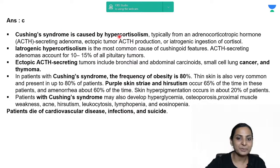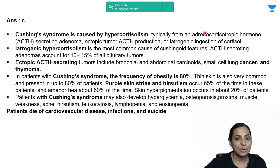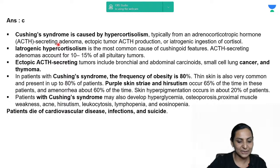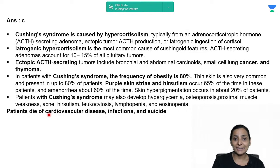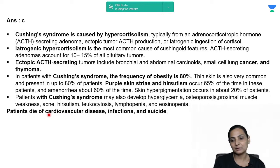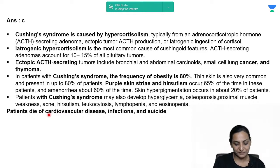Cushing syndrome is hypercortisolism — excess of cortisol. This usually comes from an ACTH-secreting adrenal adenoma, ectopic ACTH production, or iatrogenic ingestion. For example, if a patient suffering from chronic diseases is given cortisol over a long period, this iatrogenic hypercortisolism is the most common cause of cushingoid features.